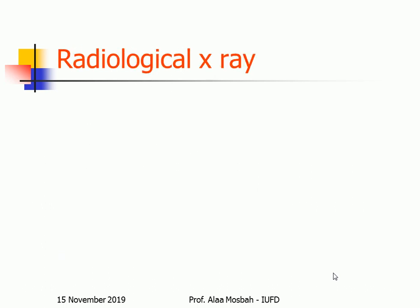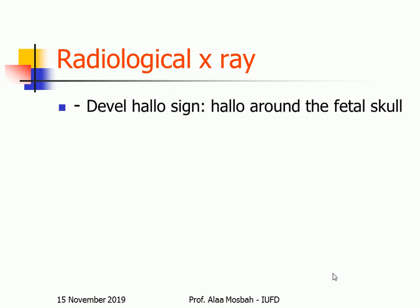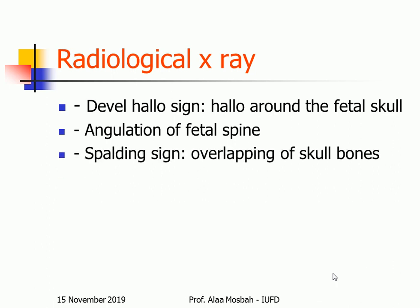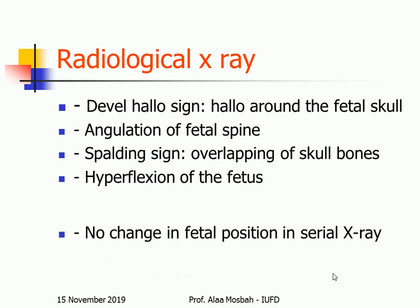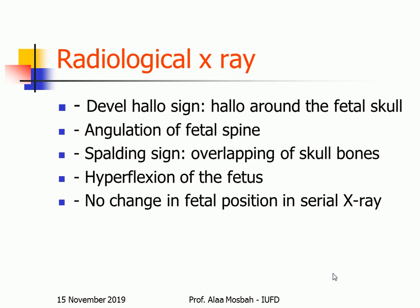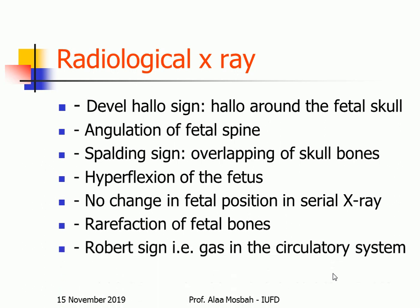Regarding investigations, radiological X-ray: we may see the Deuel halo sign — a halo around the fetal skull — angulation of the fetal spine, Spalding sign with overlapping of the skull bones, hyperflexion of the fetus, no change in fetal position on serial X-ray, rarefaction of fetal bones, and Robert's sign in which there is gas in the circulatory system.